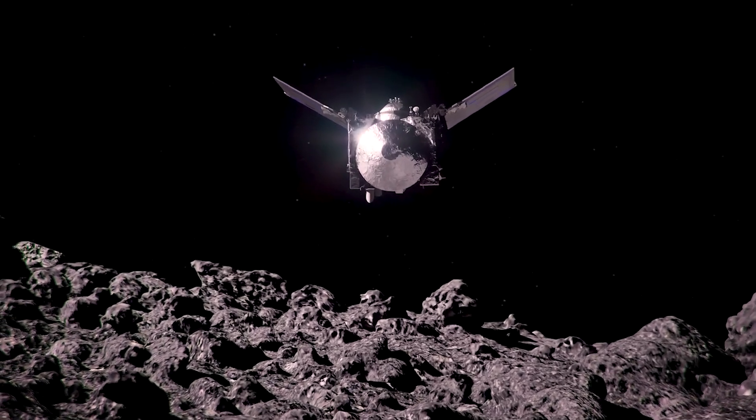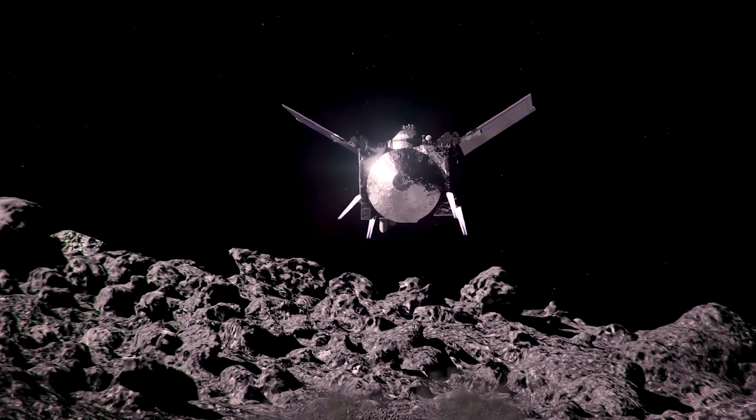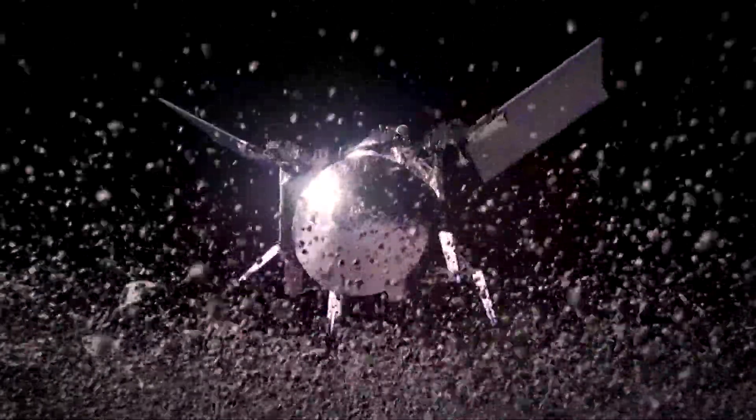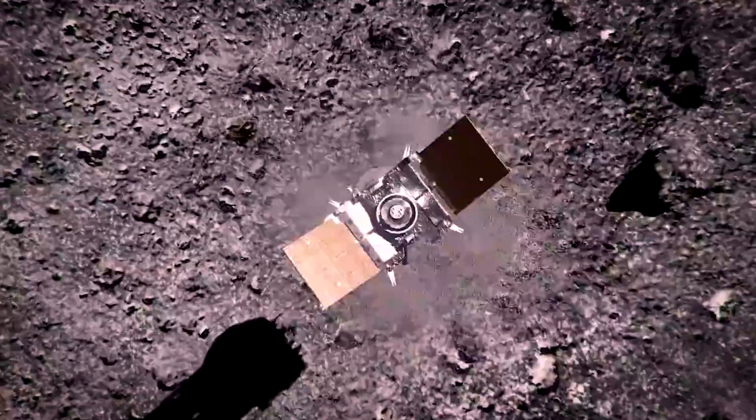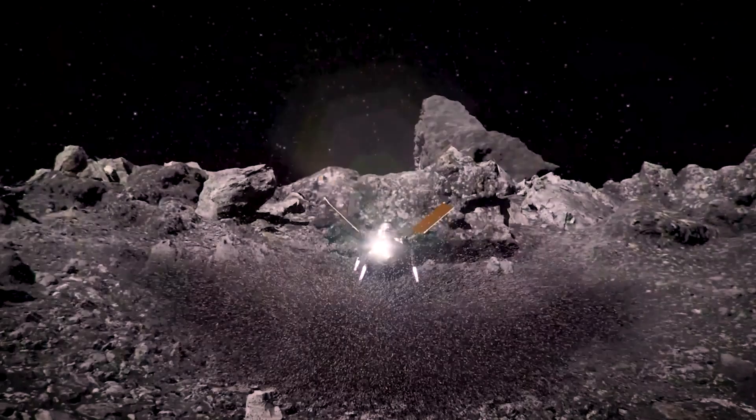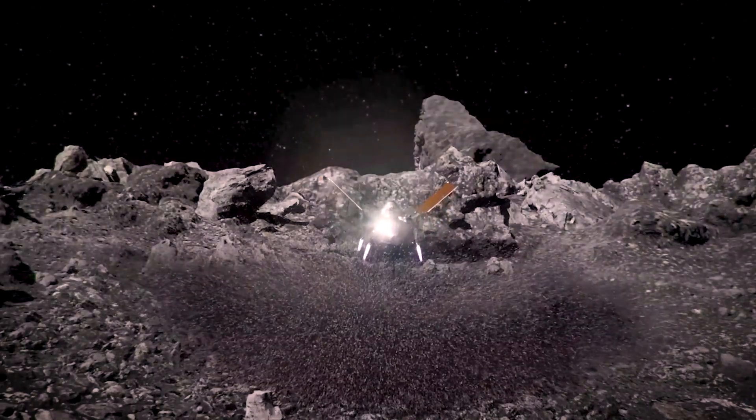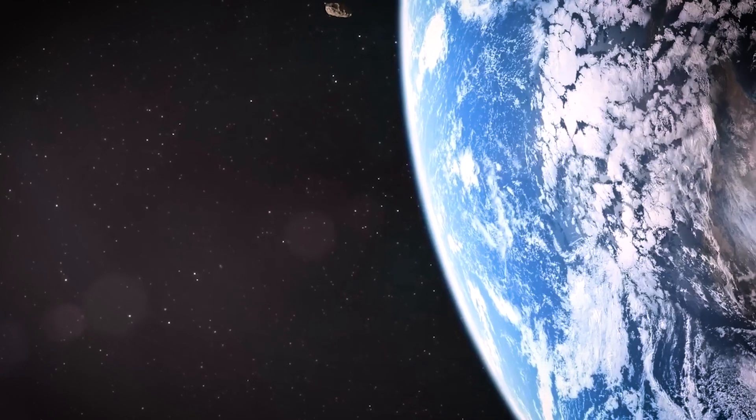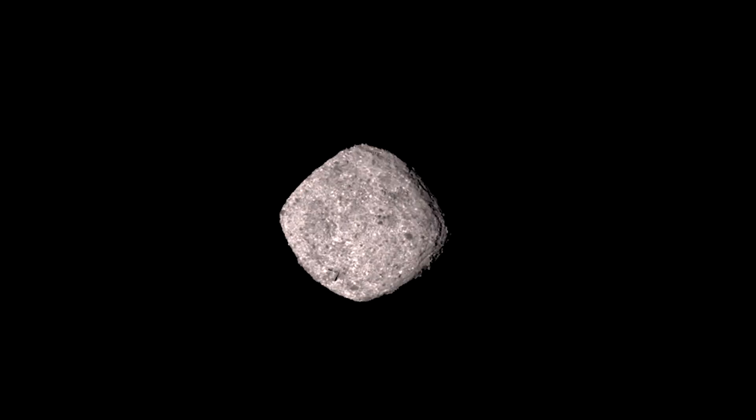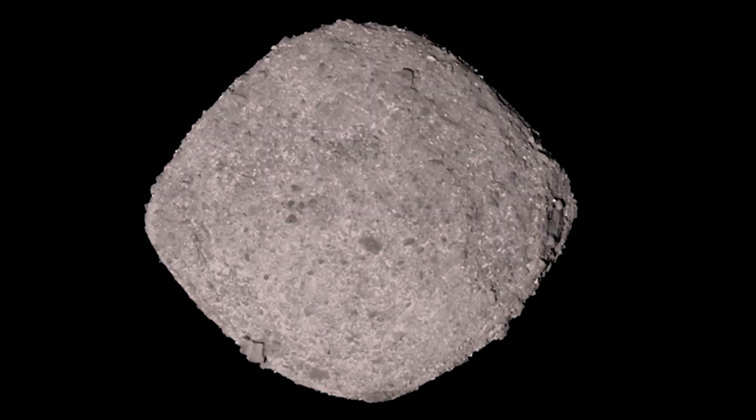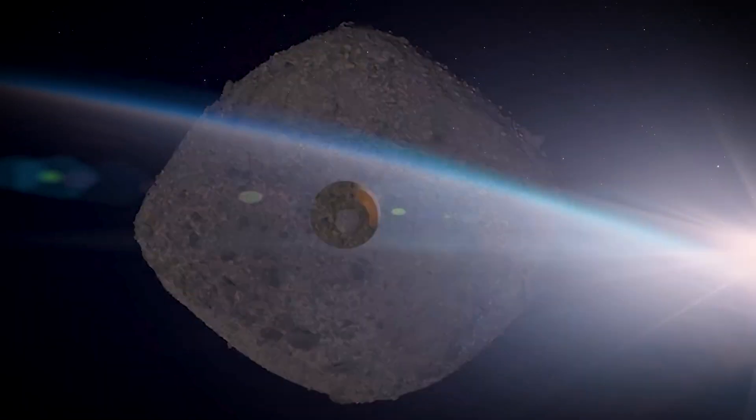You may have heard that Bennu has a slight chance of colliding with Earth in about 160 years, with odds of less than 1 in 1700. Although the likelihood is small, the OSIRIS-REx mission has significantly improved our understanding of Bennu's orbit, helping scientists better predict its trajectory and mitigate potential risks. The initial findings from Bennu's samples have already exceeded expectations, offering an extraordinary glimpse into the building blocks of our solar system. And with the OSIRIS-APEX mission on the horizon, the mysteries of asteroids like Bennu and Apophis are far from finished unfolding. What secrets will they reveal next?